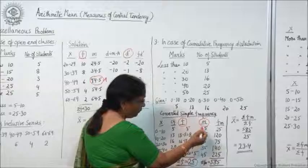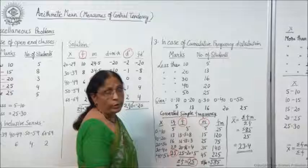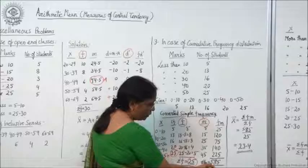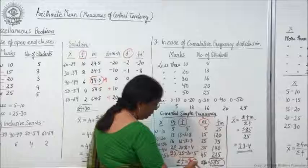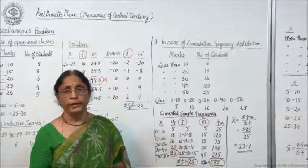Here you are multiplying 5 with 5 to get 25, 8 into 15, 3 into 25 is 75, 4 into 35 is 140, 5 into 45 is 225. After getting this column you have to add up, because you need Σfm — the total of this column is 585. Now place the values: Σfm is 585, Σf is 25, and this equals 23.4 — this is your arithmetic mean.